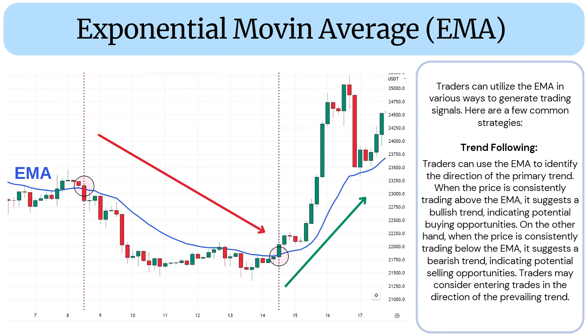Traders can utilize the EMA in various ways to generate trading signals. Here are a few common strategies. Trend Following: Traders can use the EMA to identify the direction of the primary trend. When the price is consistently trading above the EMA, it suggests a bullish trend, indicating potential buying opportunities.